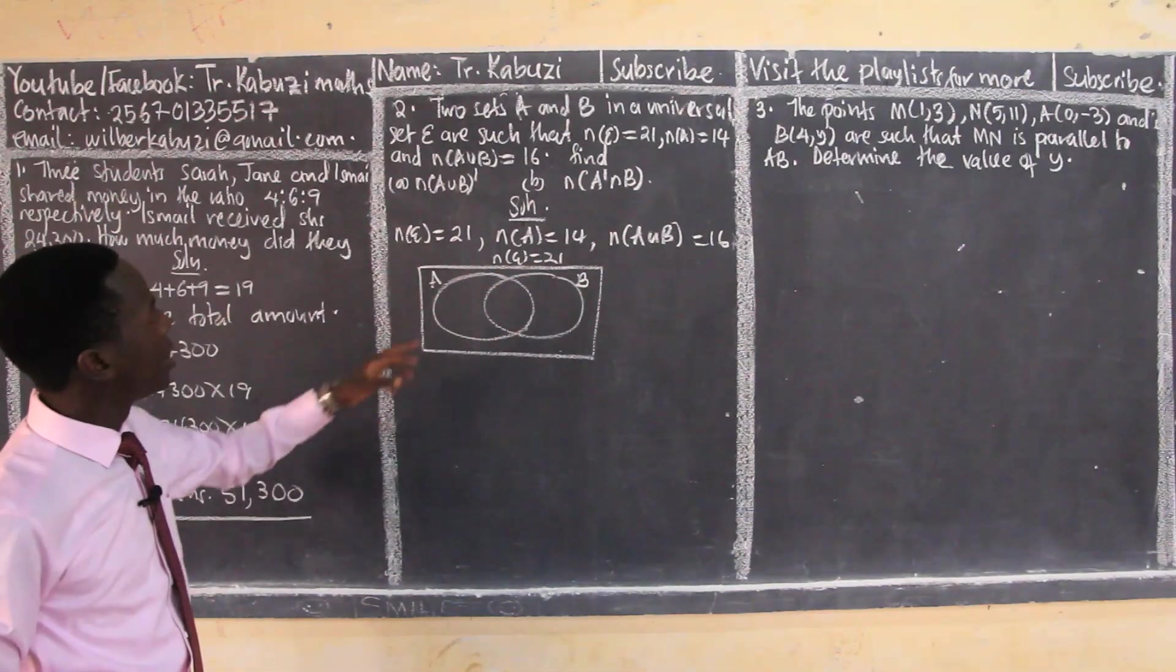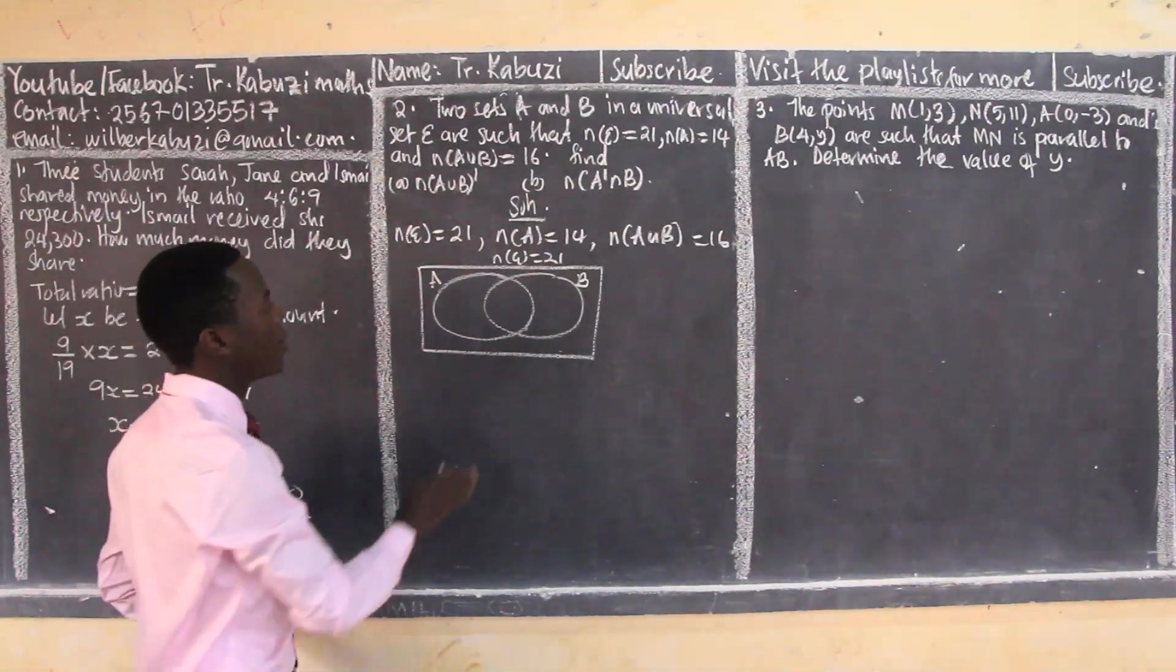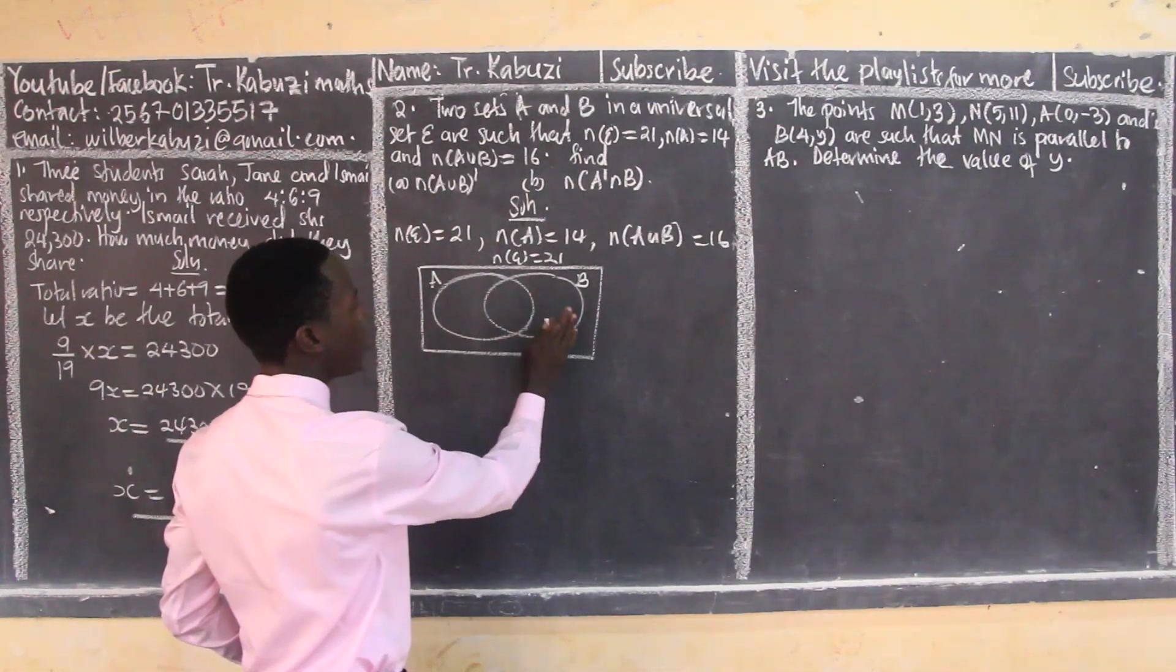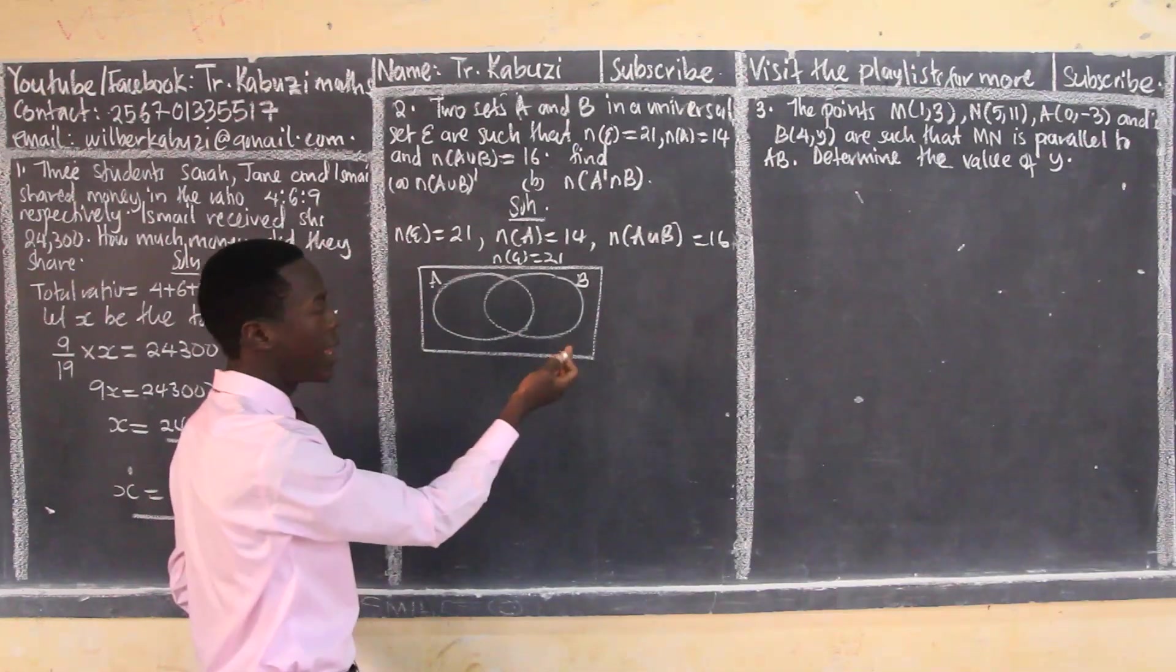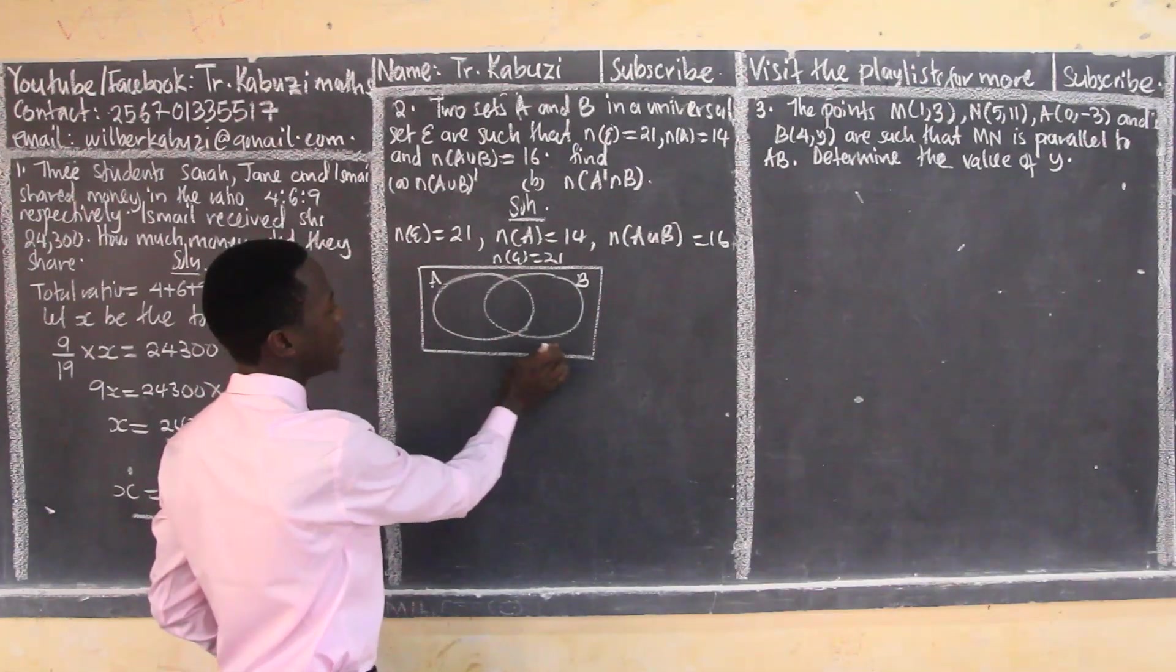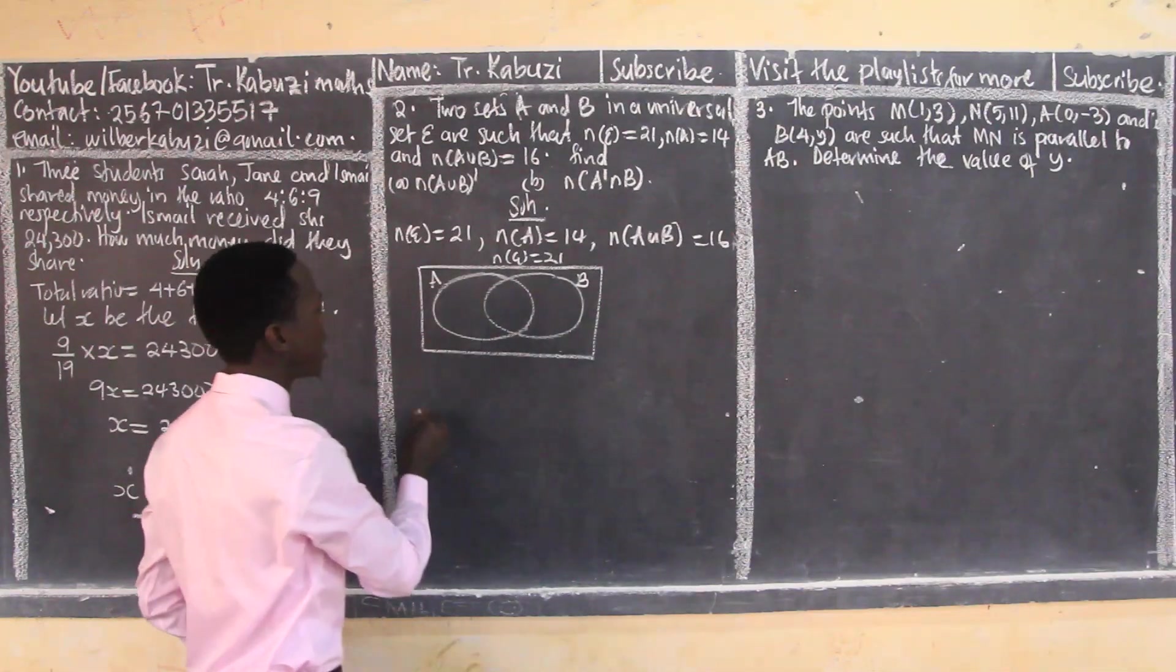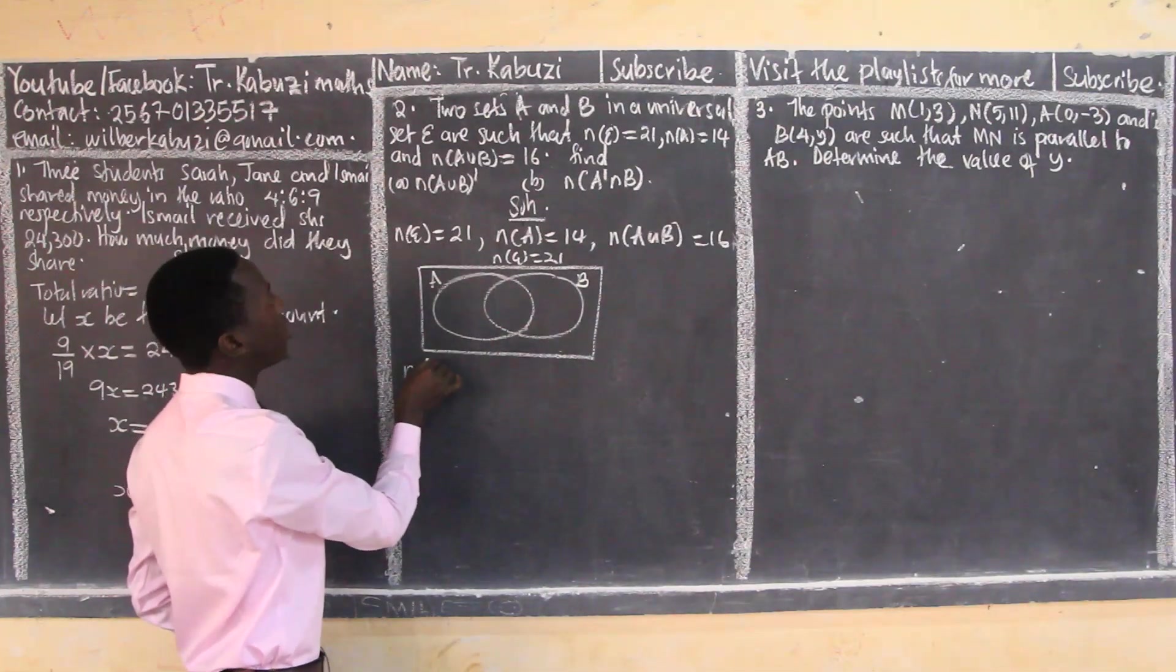Now they are telling us to find A union B complement. Now all of this is the union. The complement is anything outside there. So A union B complement is the space there.